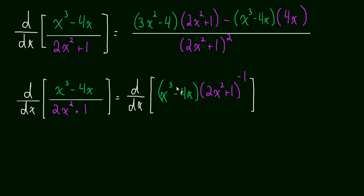First, we take the derivative of the first term, so that's going to be 3x squared minus 4 times by the second term. Leave it alone. So, this is the product rule I'm doing right now, 2x squared plus 1 to the negative 1. And then we add,